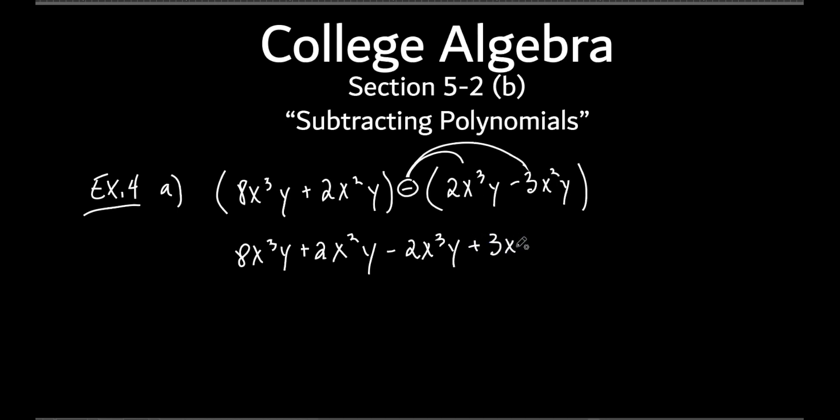Probably takes longer just rewriting this stuff than actually doing the subtraction part. So we put minus 2x cubed y, and then here's the common mistake. A lot of people will just write down minus 3x squared y, because they forget to distribute it. Most of the time, students put the minus in front of the first one, but they forget that second one.